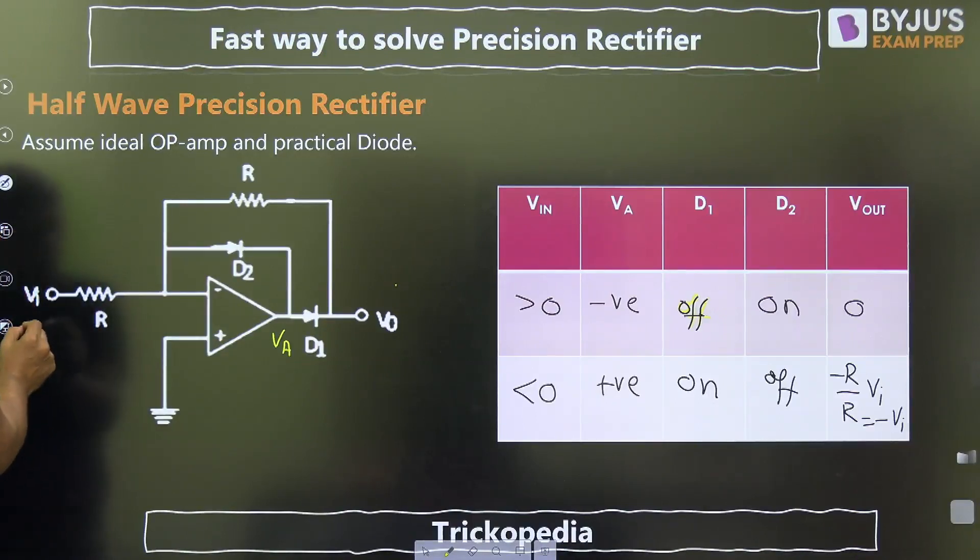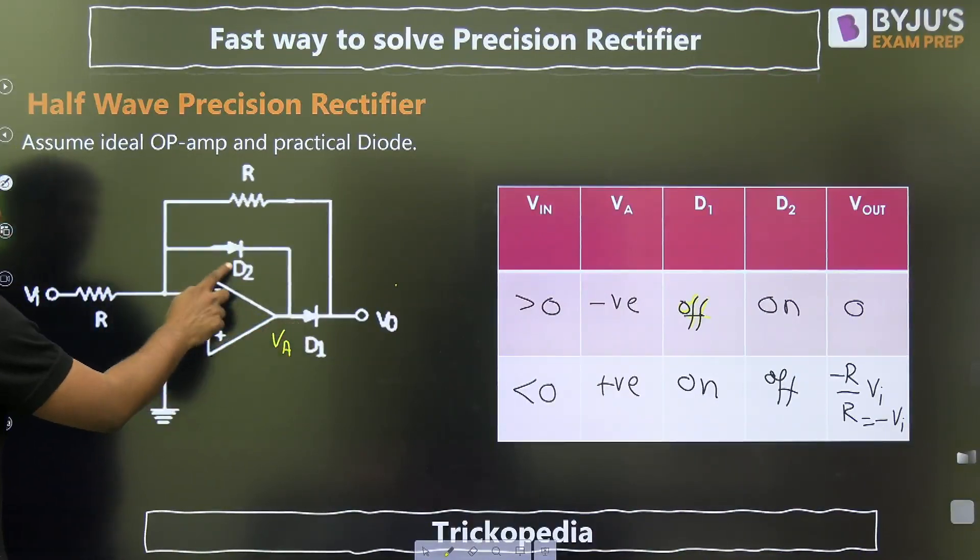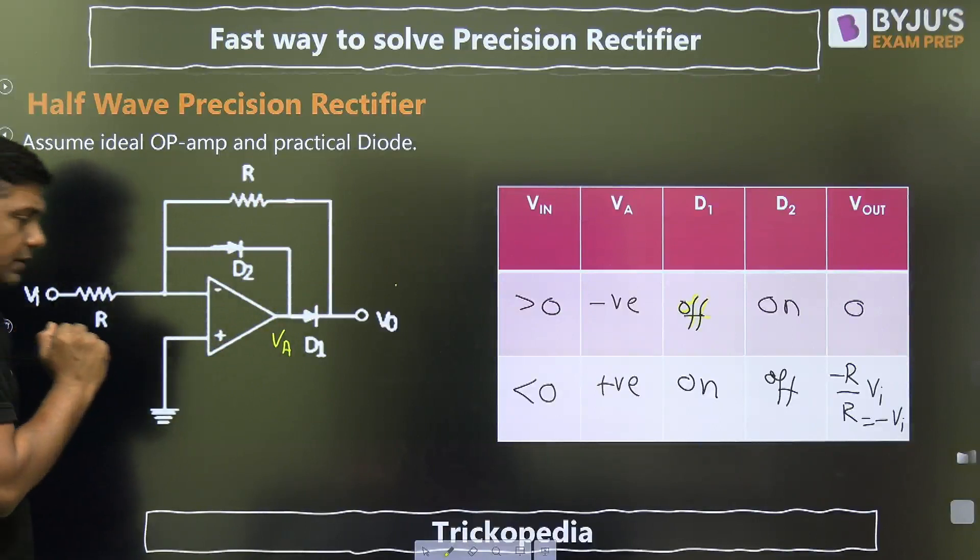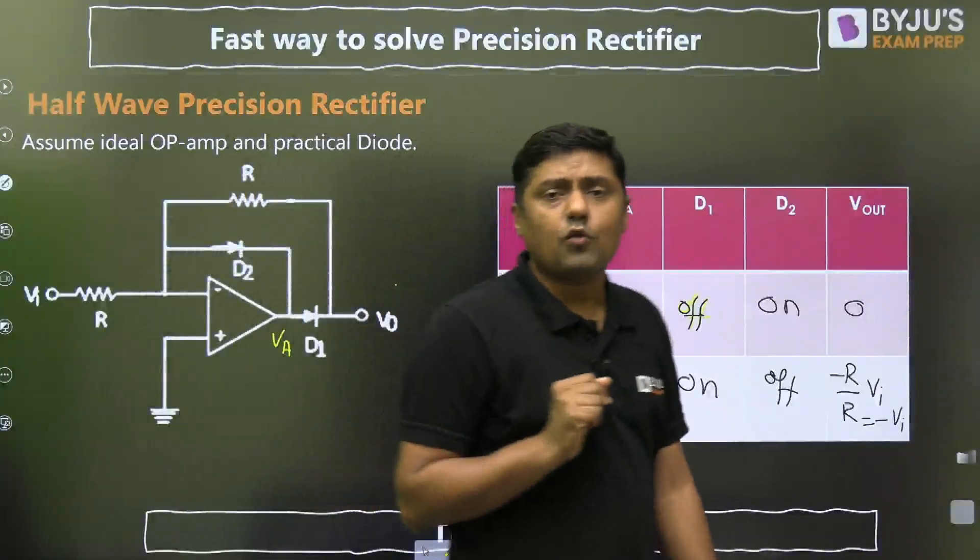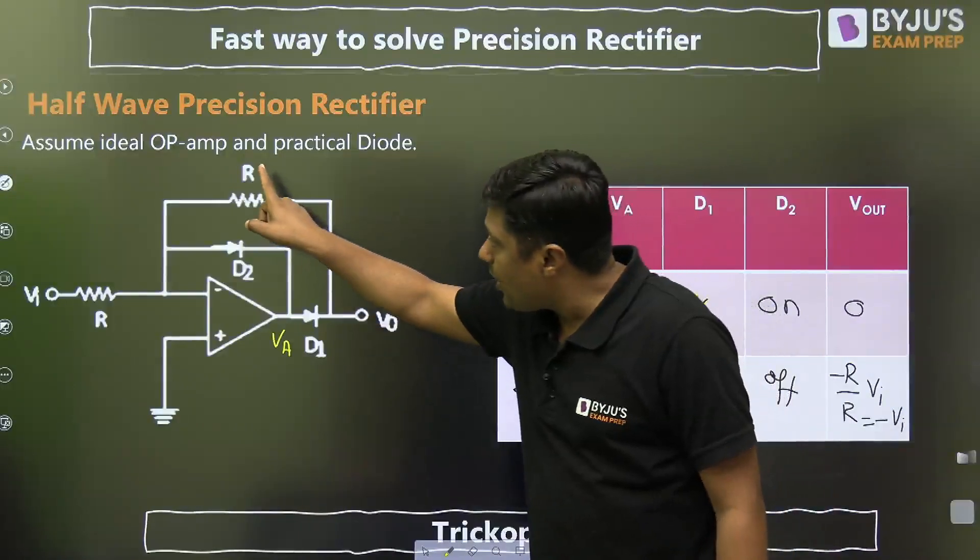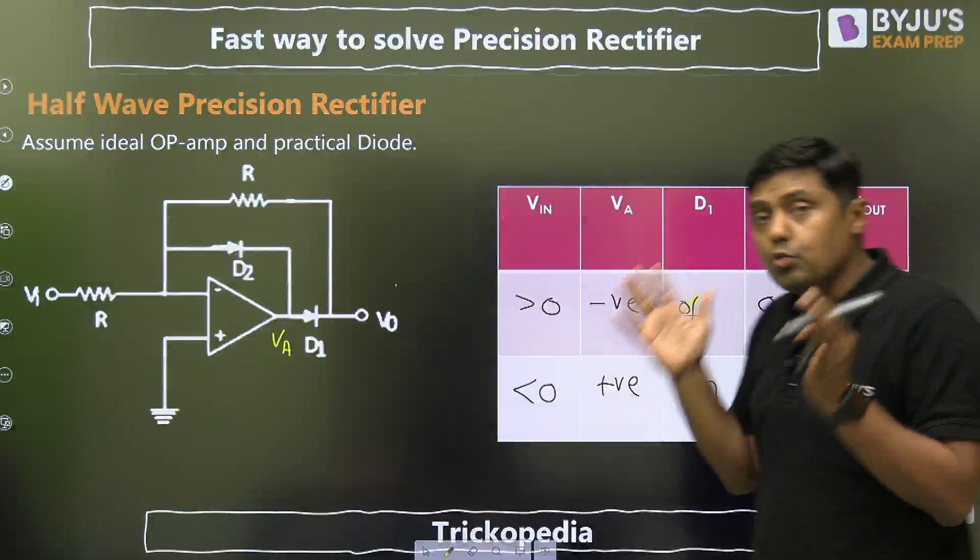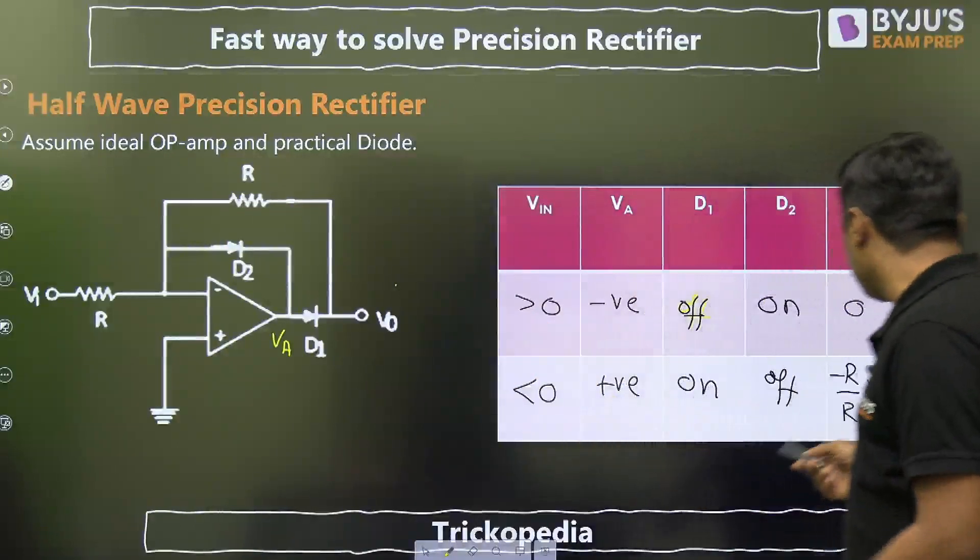When V in is negative, because of 180 degree phase shift, here you will get the positive value. Because of positive, D1 is on, D2 is off. Again, there is negative feedback. It will avoid the saturation of op-amp. And what is V0? Minus R by R into VI, just like inverting half-wave rectifier. That is minus VI.